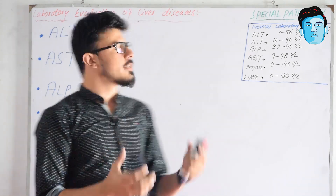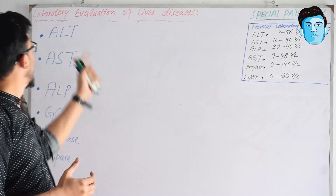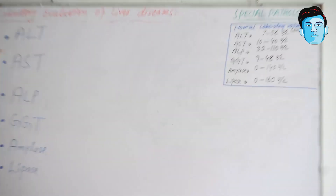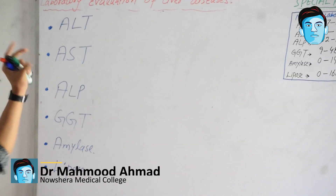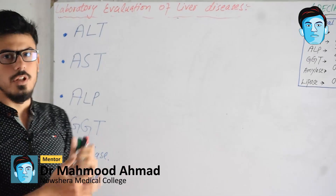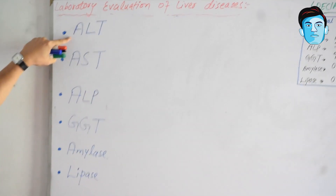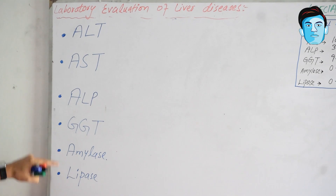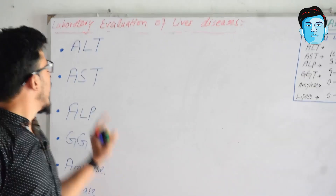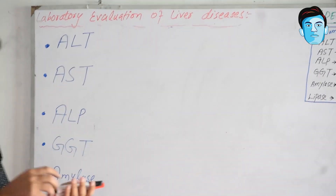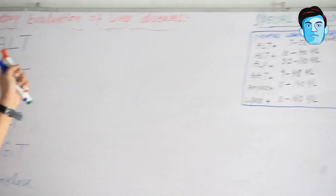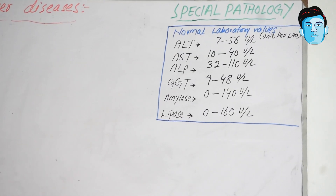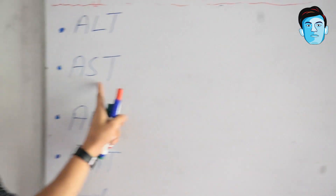Assalamu alaikum doctors. Let's talk about the laboratory evaluation of liver diseases. There are certain enzymes which are important for diagnosing liver diseases. These enzymes are ALT, AST, ALP, GGT, amylase, and lipase. ALT stands for alanine transaminases, while AST stands for aspartate transaminases.